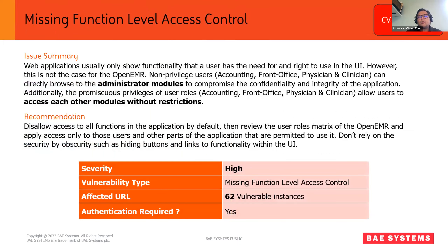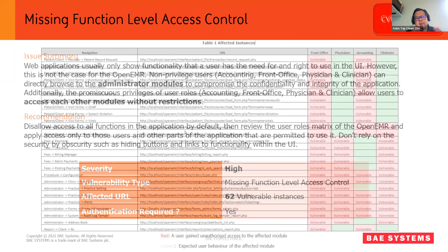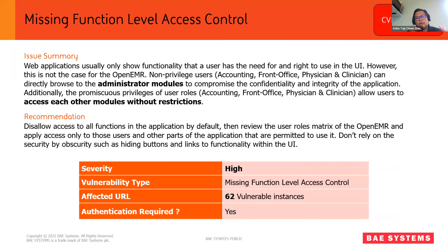We recorded only eight vulnerabilities, but in this particular IDOR vulnerability there are actually 62 of them. We are not out to amass 62 CVEs — we just want to make our point. So we just opened up one finding, and I'll pass it to Aidan to give his explanation on the further analysis of the IDORs found on the other pages.